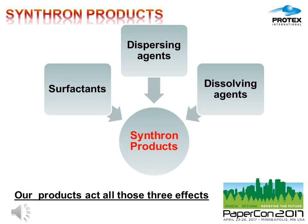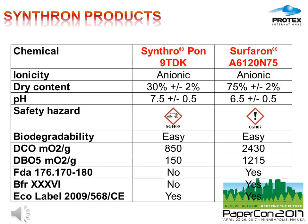The products we propose today act on all three of those effects — meaning they work as surfactants, as dispersing agents, and also as dissolving agents. In this slide, you can see the most important characteristics of the two products we propose as wash aid solutions. Both of them are anionic, both have good biodegradability, and most have Ecolab certification. Moreover, one of these two products is also FDA and BFR approved.